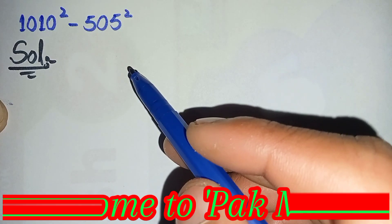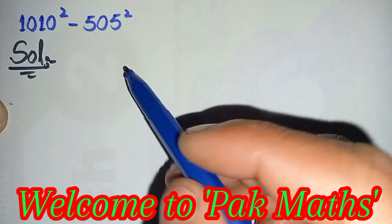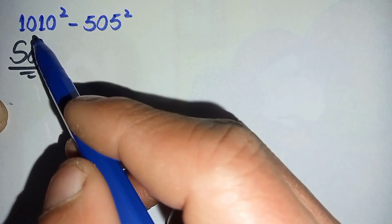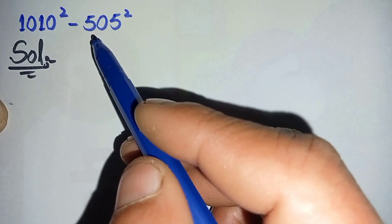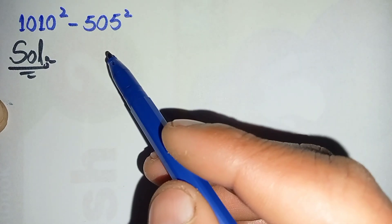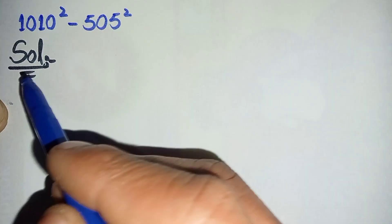Hi everyone, welcome to Parkmas. In this video I'm going to solve this nice squaring math problem, that is 1010² - 505². Now to solve this math problem properly and step by step, I'll write the solution.